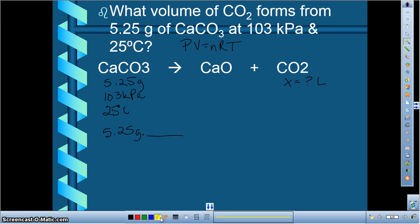Alright, let's change colors to yellow. Okay, so we have 5.25 grams of CaCO3. We know that one mole, if you add up the molar mass of CaCO3, is about 100 grams. That's going to change the number of moles to 0.0525 moles of CaCO3.